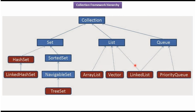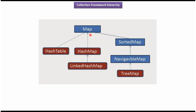Vector class and LinkedList class also implement List interface. Queue interface is implemented by LinkedList class and PriorityQueue class. Map interface is implemented by Hashtable class and HashMap class. HashMap class is extended by LinkedHashMap class.